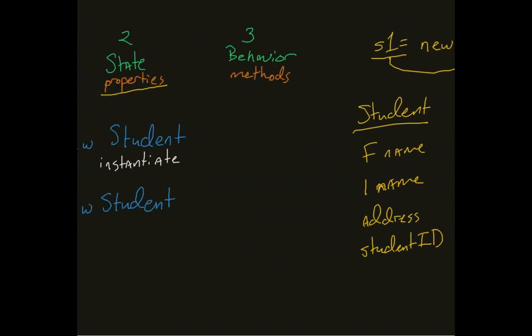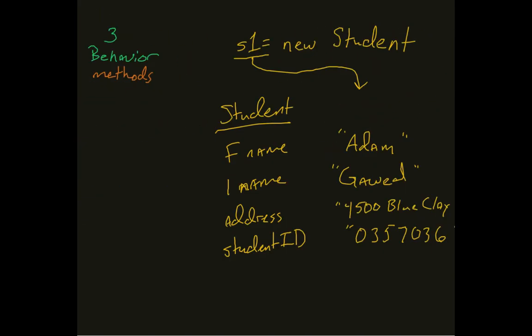Now again, notice how I made a second student. I made two students here. So what if I made a second S2 equals new student? Well, again, they are going to have their own first name, their own last name, their own address, their own student ID as well. So we could look at this as, since we just had the Super Bowl, we have someone like Russell Wilson.